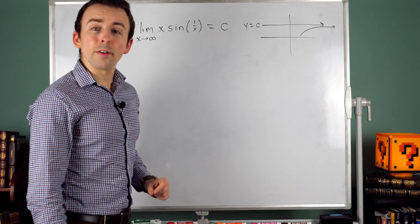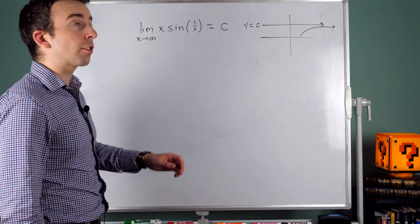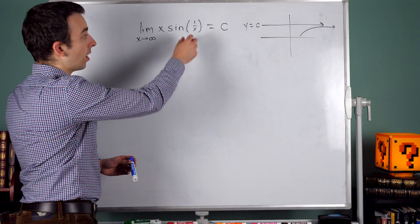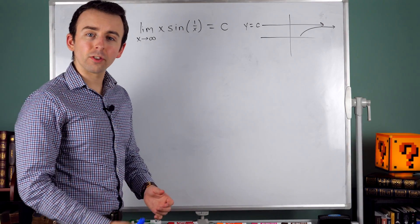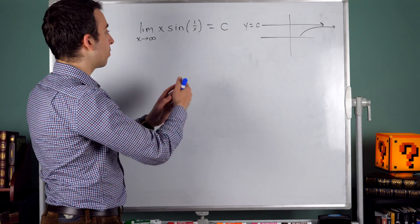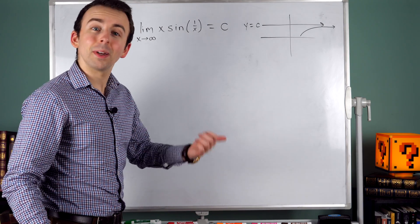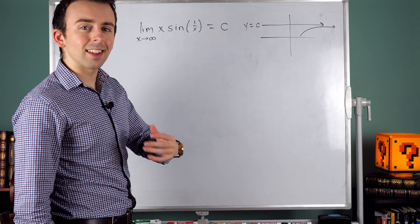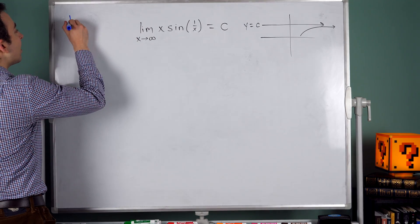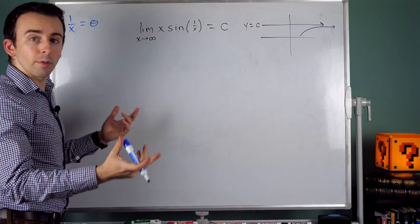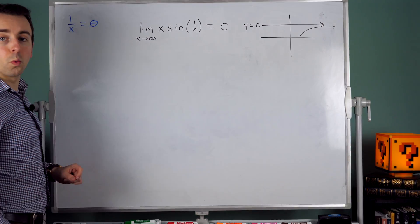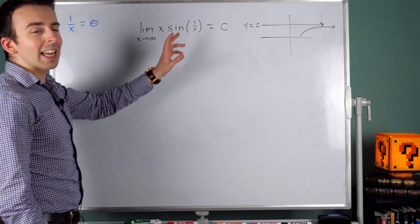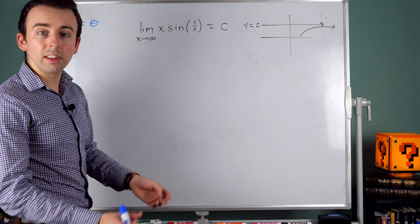Let's get to it and evaluate this limit. An obvious complicating factor in this problem is that inside the sine function, we have another non-trivial function of x — we have 1 over x. Perhaps in the sine function, we'd rather just have a single variable. Instead of 1 over x, we'd like it to just be sine of x. But it isn't. We could just give 1 over x some other name, and maybe that would help make it clearer how to proceed. So let's say that 1 over x is equal to theta. We're defining this new variable theta equal to 1 over x, and then re-expressing this limit in terms of theta.